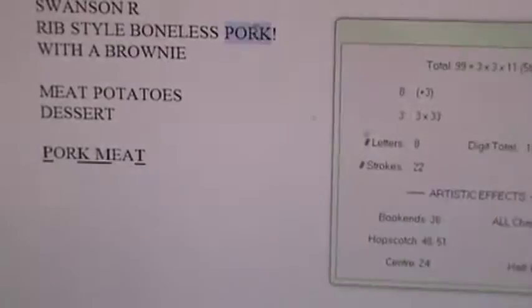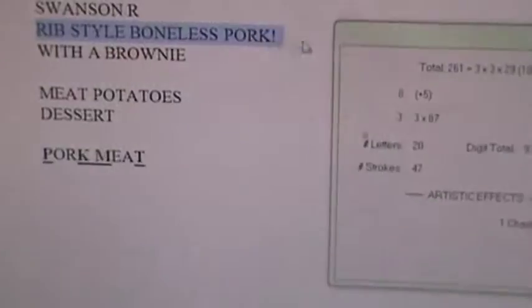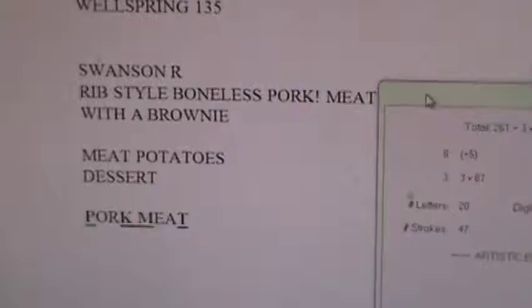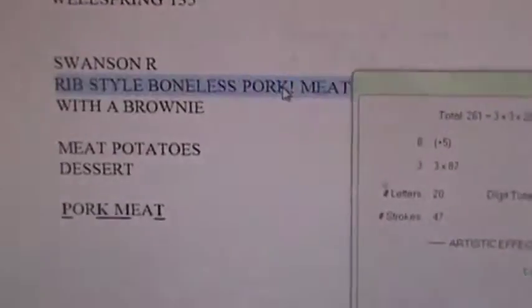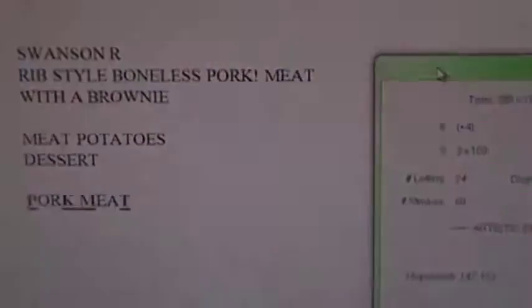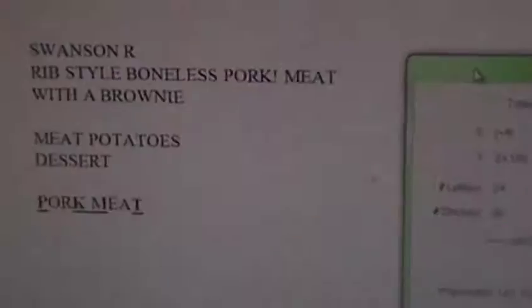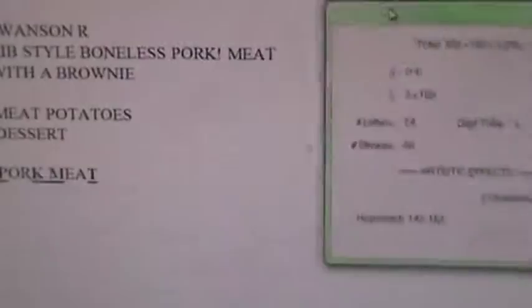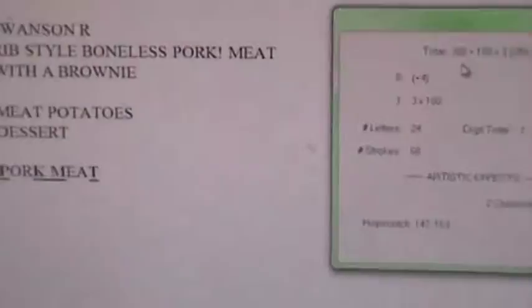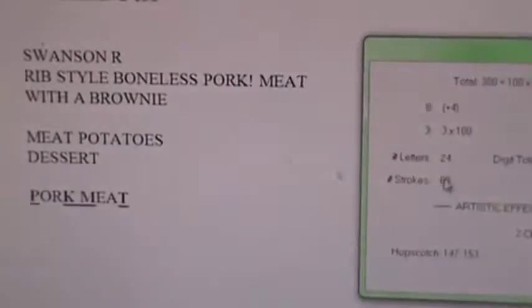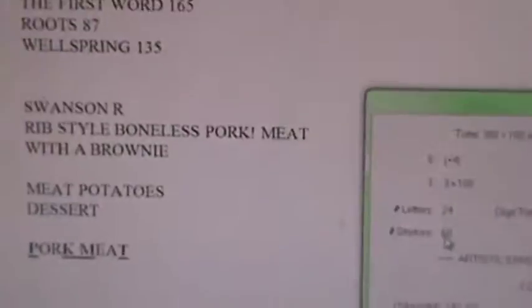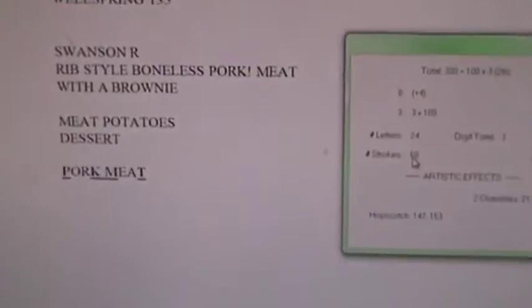If you wanted, you could add the word 'meat' to the rib-style, boneless, pork, meat. And then red divides by 3, just like brown. That adds to 300 perfectly. So rib-style, boneless, pork, meat adds to 300 perfectly, to the glory of the Trinity — in 24 letters, 60 strokes, all divides by 3.